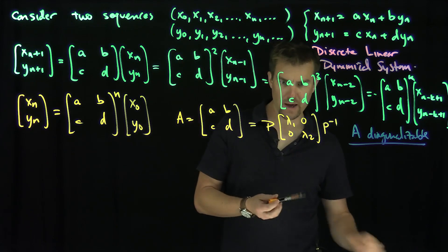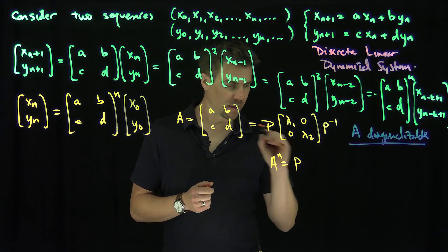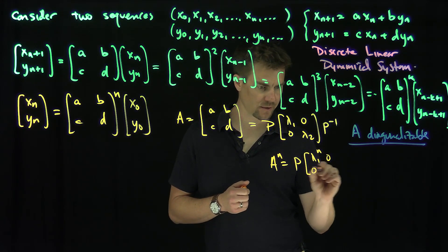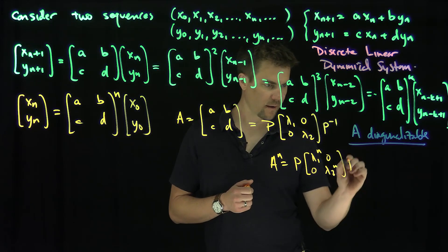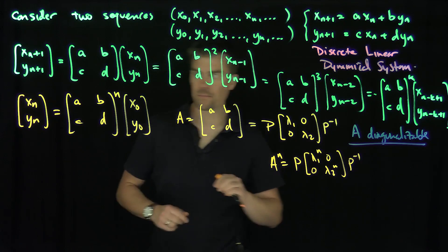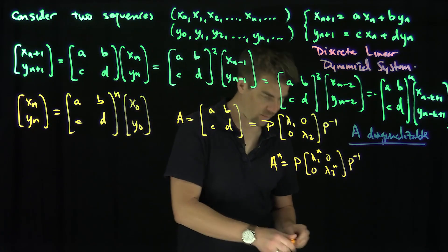Then what we can show is that A to the power of n is P, lambda 1 to the n, 0, 0, lambda 2 to the n, P inverse. Because all the P's and the P inverses intermediate, those things will cancel out. And therefore the solution of this in the case when A is diagonalizable is going to have the following form.